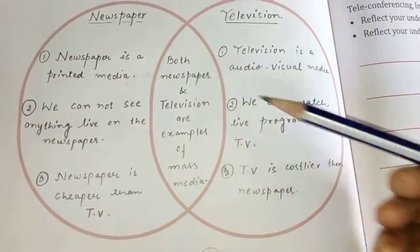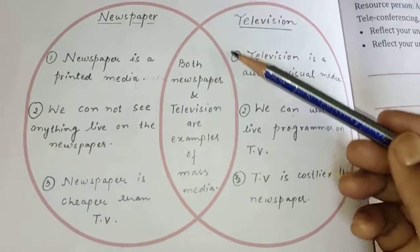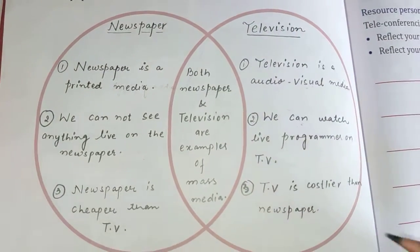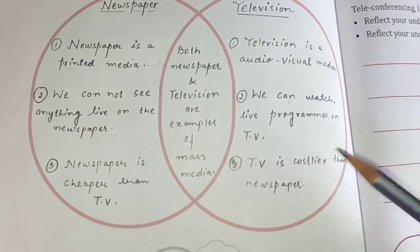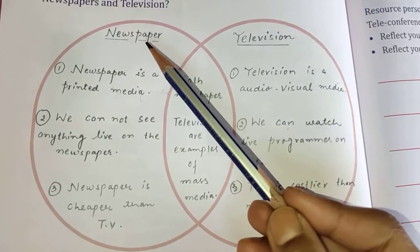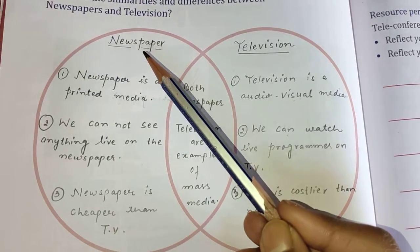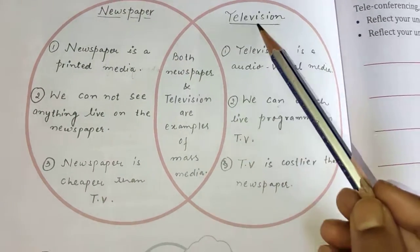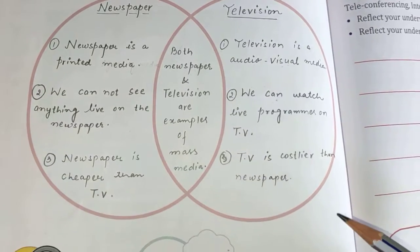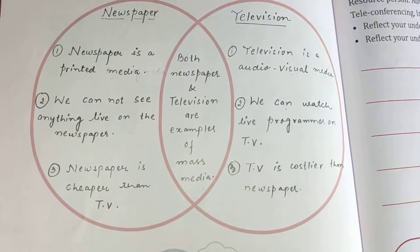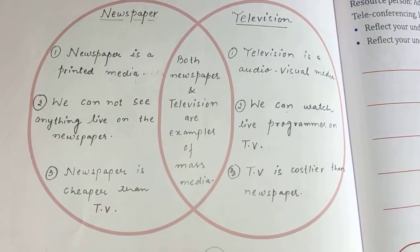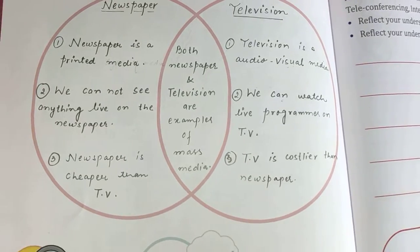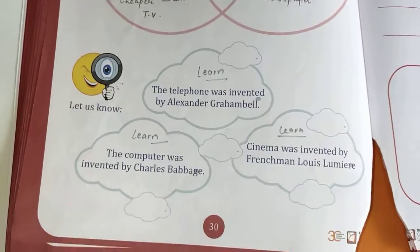Those are the differences. For similarities: both newspaper and television are examples of mass media. In both, there is a sender and a large group of receivers — many people. So television and newspaper are both mass media examples.